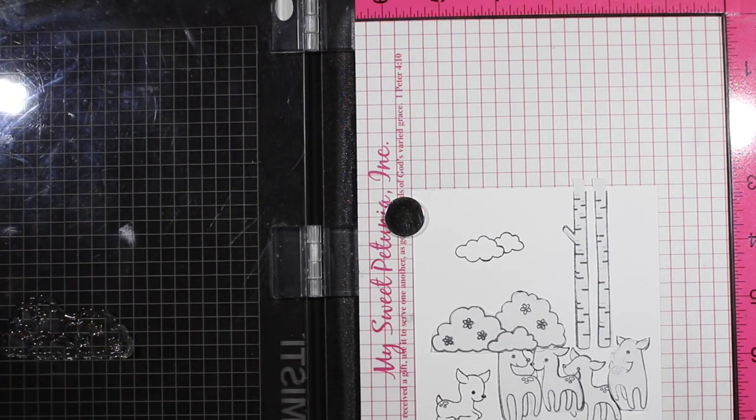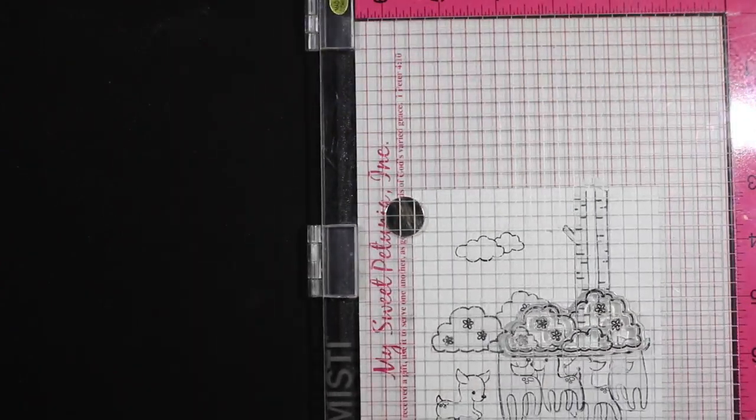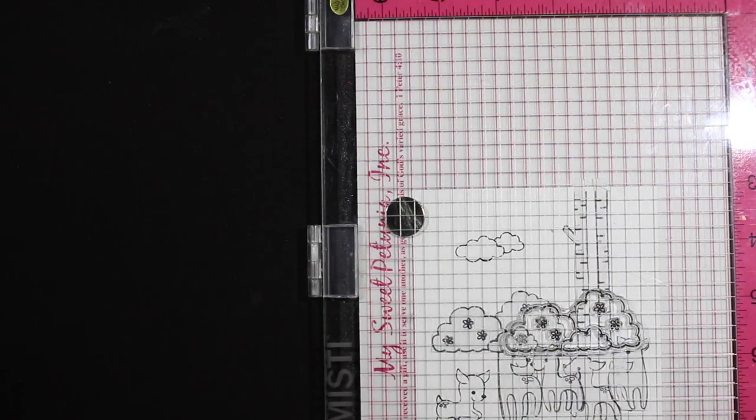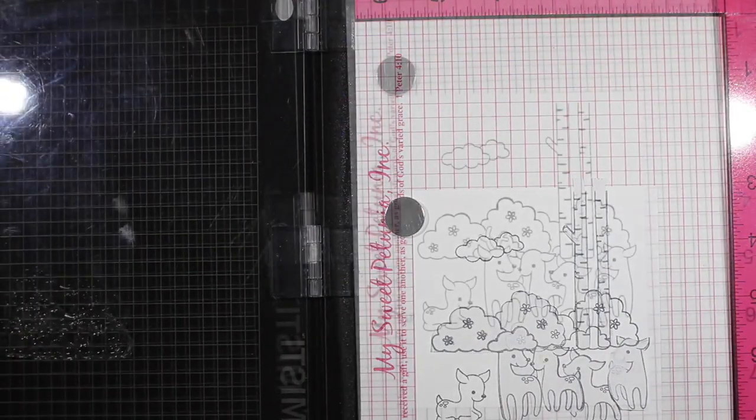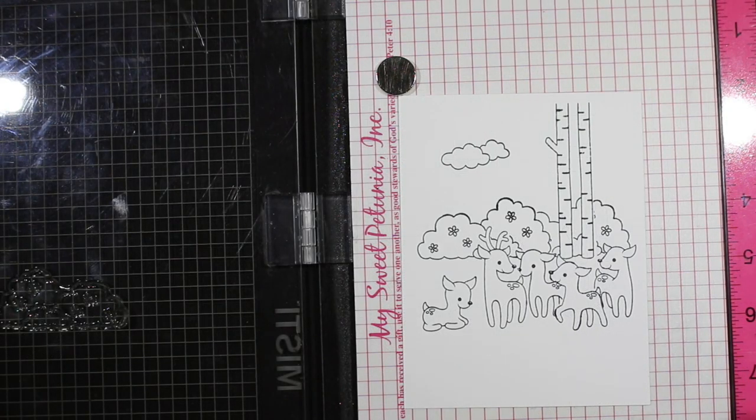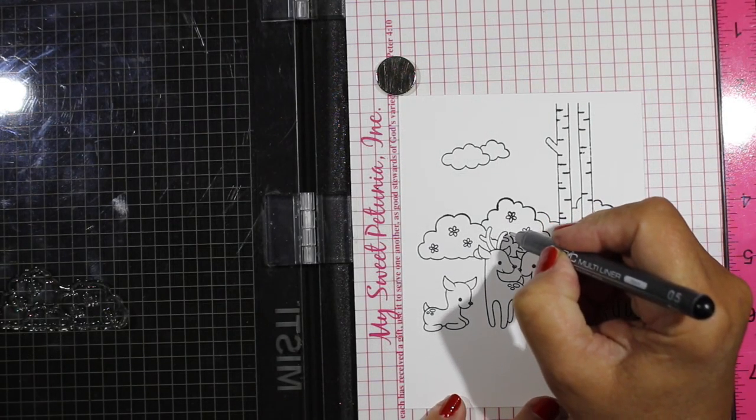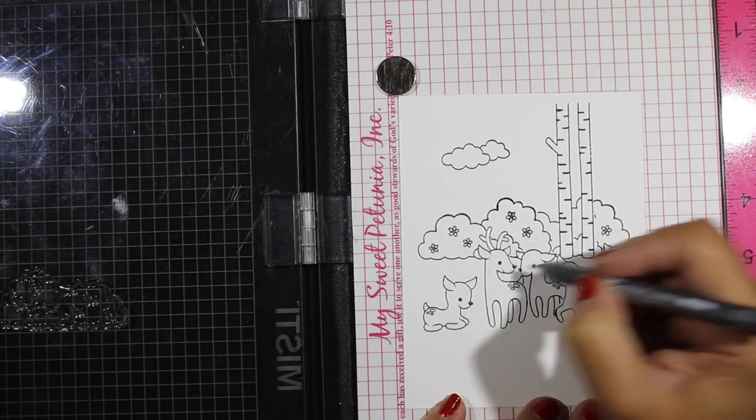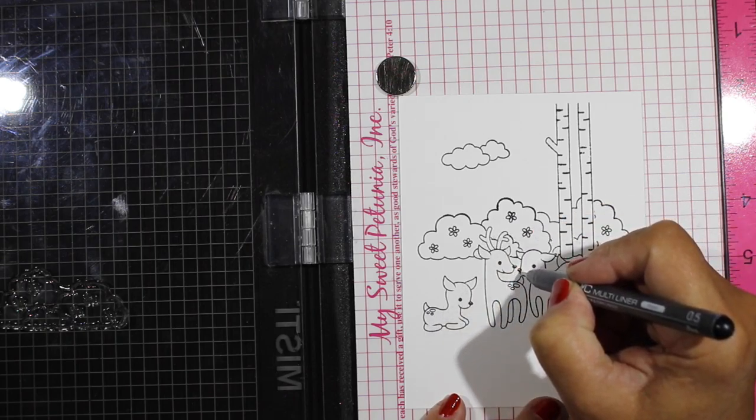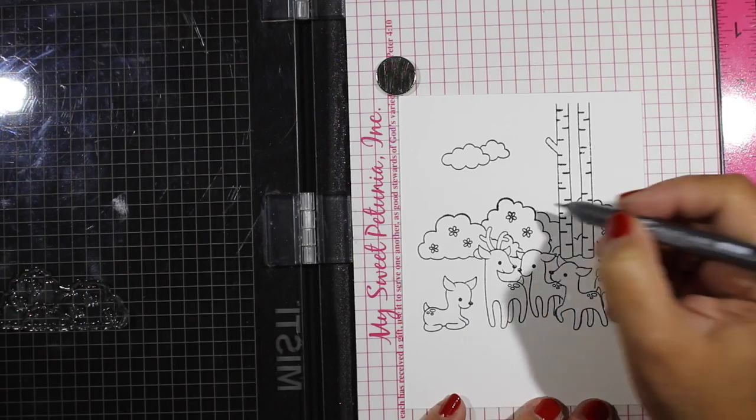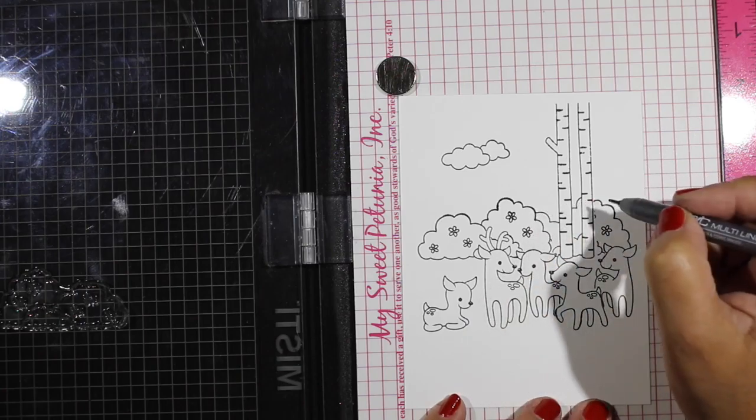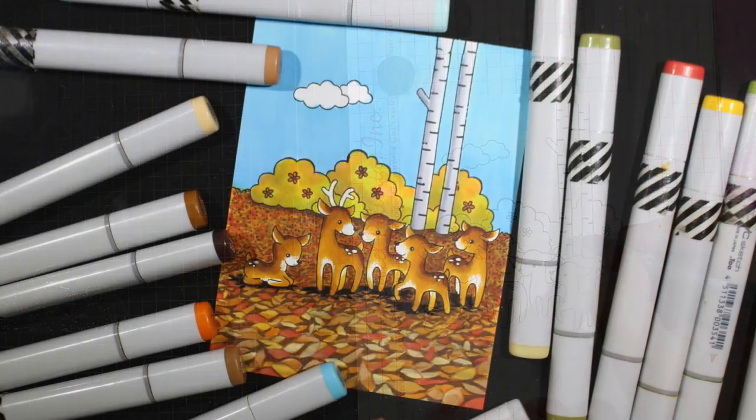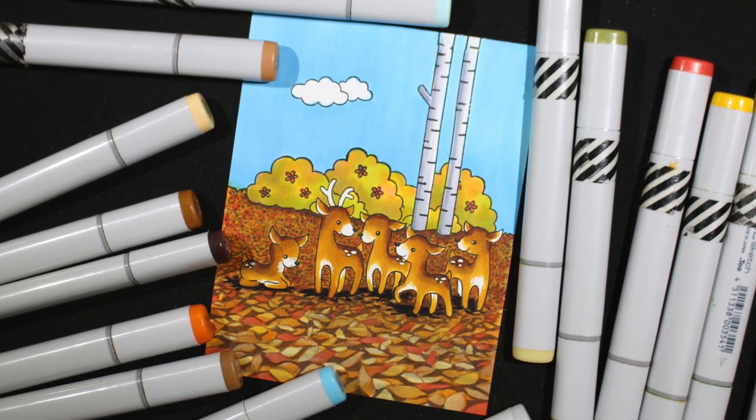Then I can ink up that stamp and stamp another set of bushes. Notice that I did remove the trees so I don't accidentally re-stamp the trees. Then press that down, remove all my masks and I've got my scene. If there's any spaces where my masking wasn't perfect or things didn't stamp I can fix that with a Copic multiliner or you could use a Sharpie if you're going to use watercolor with this. I'll just finish off any of those images that didn't quite exactly work out and then color away.